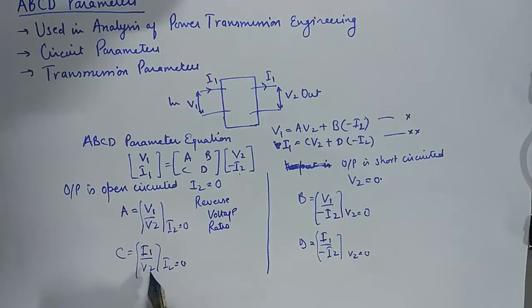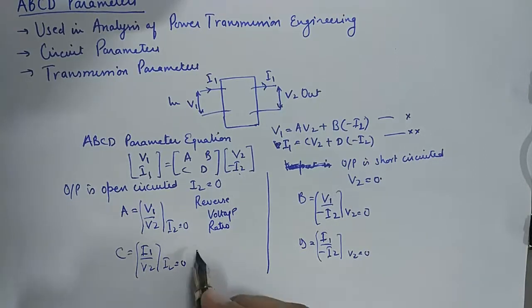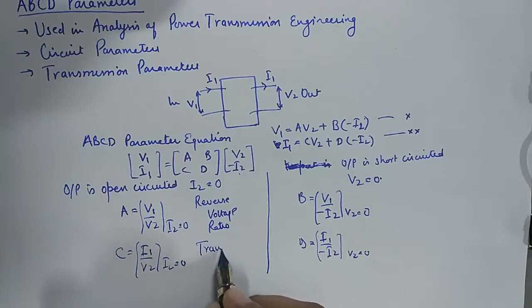C is the ratio of I upon V, so it is going to be admittance, and over here it is known as transfer admittance.